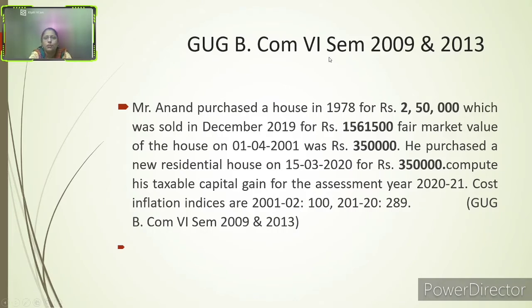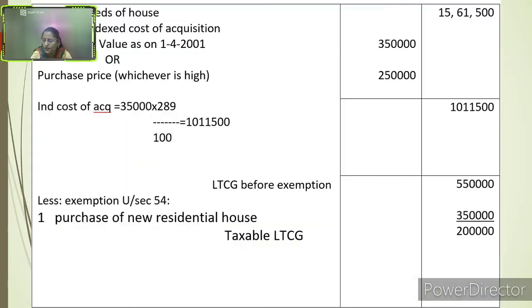Problem 2, from GOG B.Com 5th Semester 2009 and 2013: Mr. Anand purchased a house in 1978 for rupees 2,50,000, which was sold in December 2019 for rupees 15,61,500. Fair market value of the house on 1st April 2001 was rupees 3,50,000. He purchased a new residential house on 15-3-2020 for rupees 3,50,000. Cost inflation indices: 2001-02 = 100; 2019-20 = 289. Compute taxable capital gain for assessment year 2020-21.